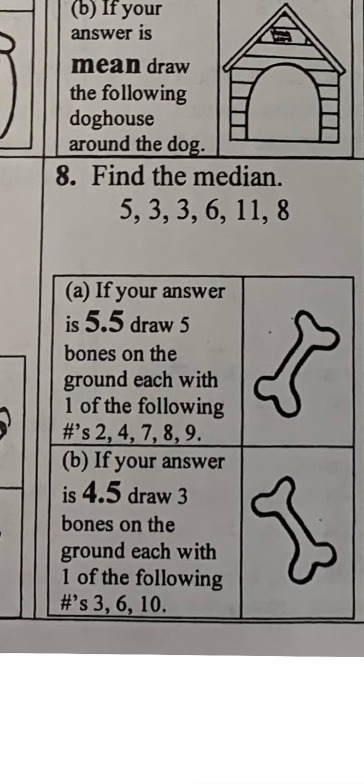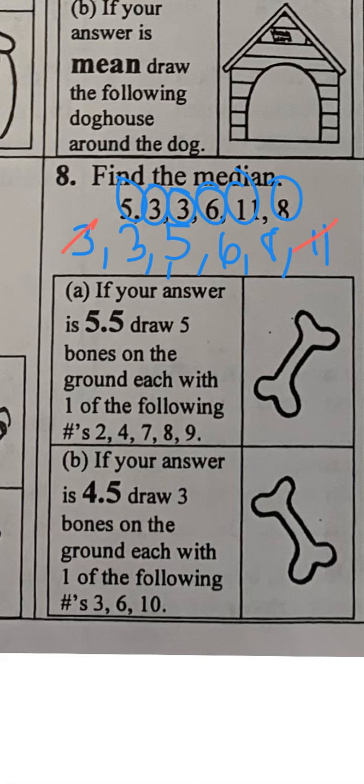This one says find the median. First step is to put it in order. My smallest number is 3, followed by 3, followed by 5, followed by 6, then 8 and 11. Median is your middle number. If I cross off here and here, keep going front to back until you get to the middle.